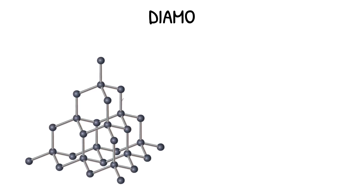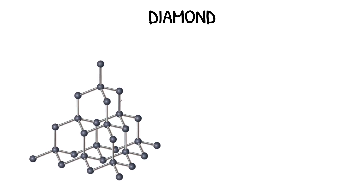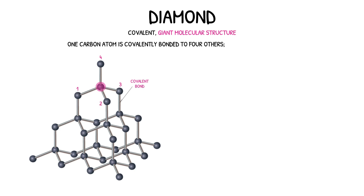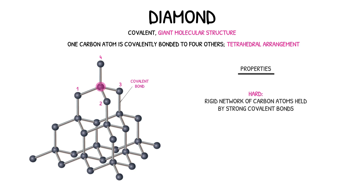Finally, we have diamond. Like graphite, diamond is a covalent giant molecular structure, where each carbon atom is covalently bonded to four others. The carbon atoms in diamond form a tetrahedral arrangement. Unlike graphite, diamond is a very hard material. This is the result of its rigid network of carbon atoms, all of which are joined together by very strong covalent bonds.